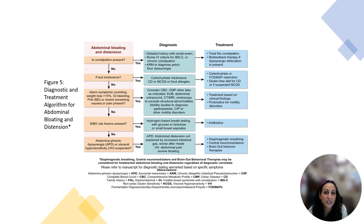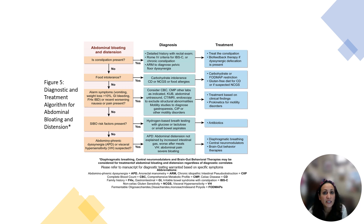In the second portion of the best practice advice, we talk about abdominal bloating and distension, and we really delve into overlap syndromes. We talk about how patients with constipation can also experience abdominal bloating, how you can use Rome 4 to differentiate CIC from IBS-C, and also ways to diagnose a pelvic floor disorder where patients may also have abdominal bloating.